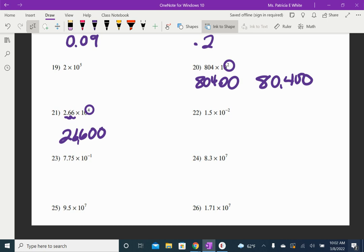What about 22? The one is going to take up one space. One, five. Now, you can put the zero in front if you want. 0.015.